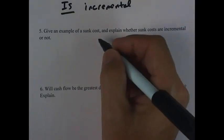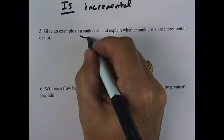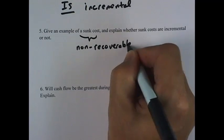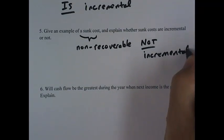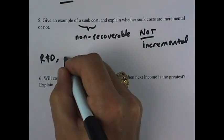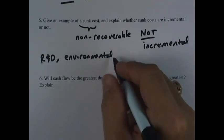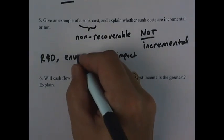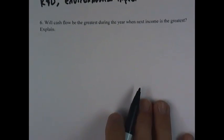An example of a sunk cost is something we paid for previously and cannot recover. Non-recoverable cost is not incremental because it will not change whether we accept a project or not. Typically research and development, environmental impact studies, and things that we make prior to actually commencing with a project are things we have to pay for. If we accept a project, we've paid for those. If we reject the project, we've paid for those, and we can't get them back either way.